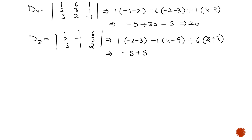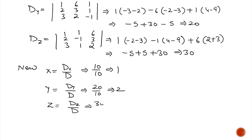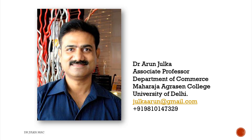Now x = Dx/D = 10/10 = 1. Y = Dy/D = 20/10 = 2. Z = Dz/D = 30/10 = 3. So the values of x, y and z are 1, 2 and 3. This is the unique solution of the system of equations. Thank you.